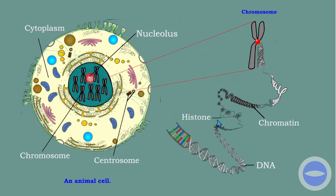The function of a histone protein is to provide structural support for a chromosome or for DNA. When we wrap the DNA on a histone and condense them together — putting them close together — we end up with a chromosome.